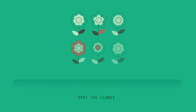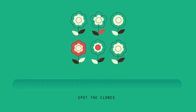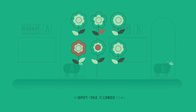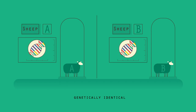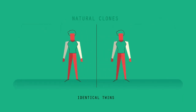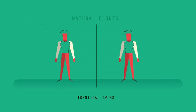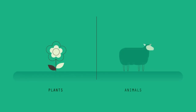Can you spot the two clones? When we talk about clones in science, we mean organisms that are identical copies — they have the same DNA as each other. Identical twins are examples of naturally occurring clones.